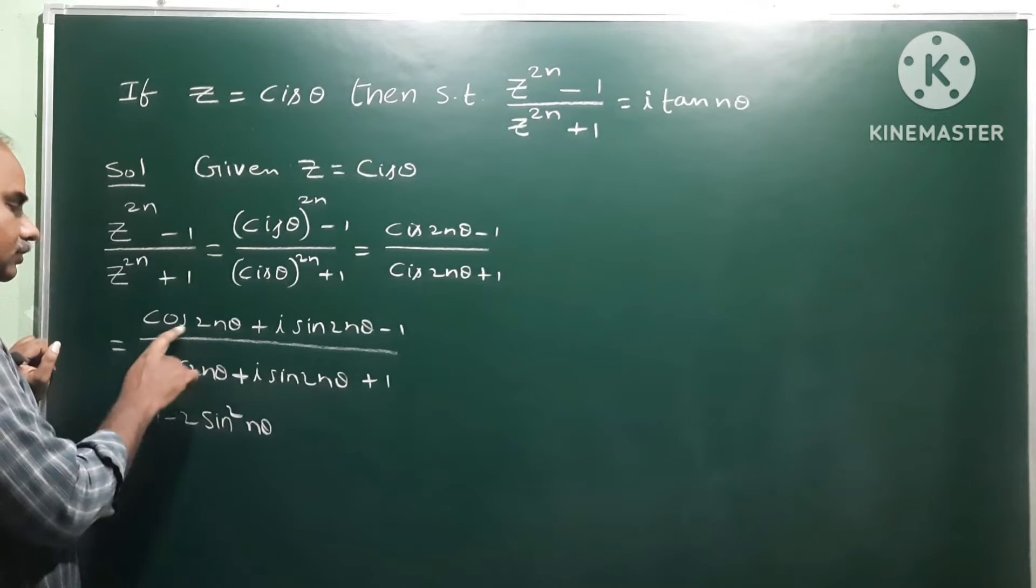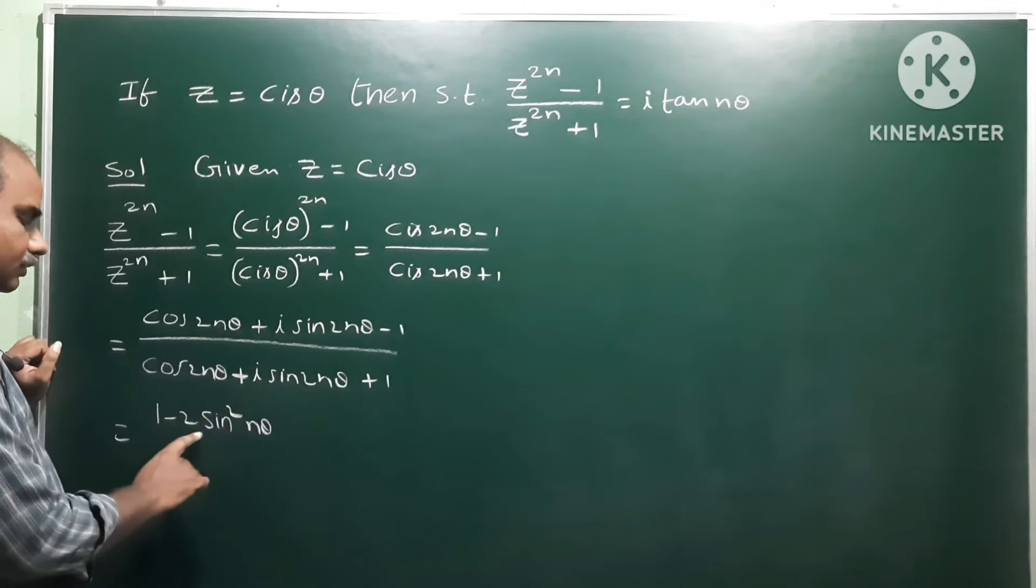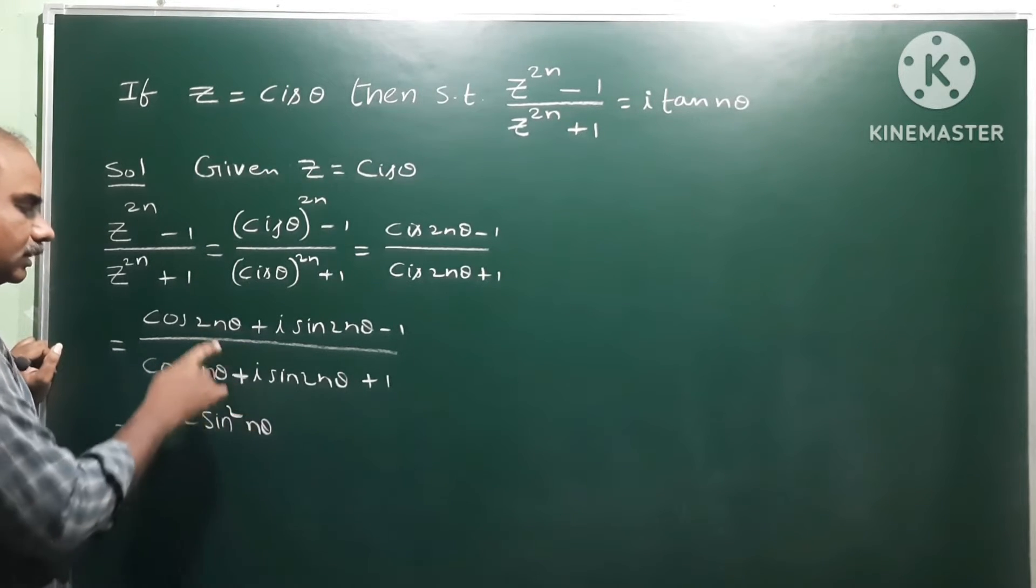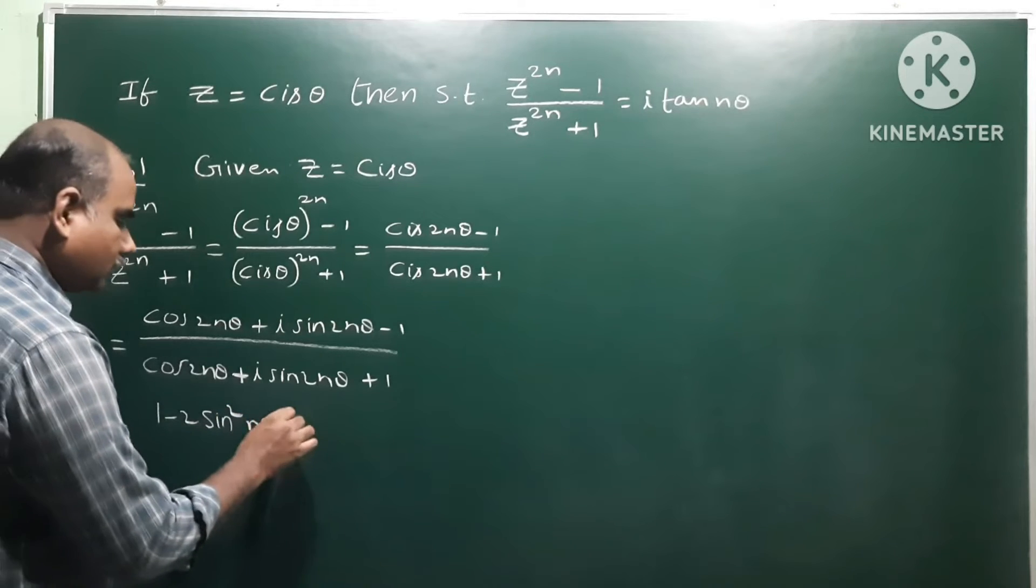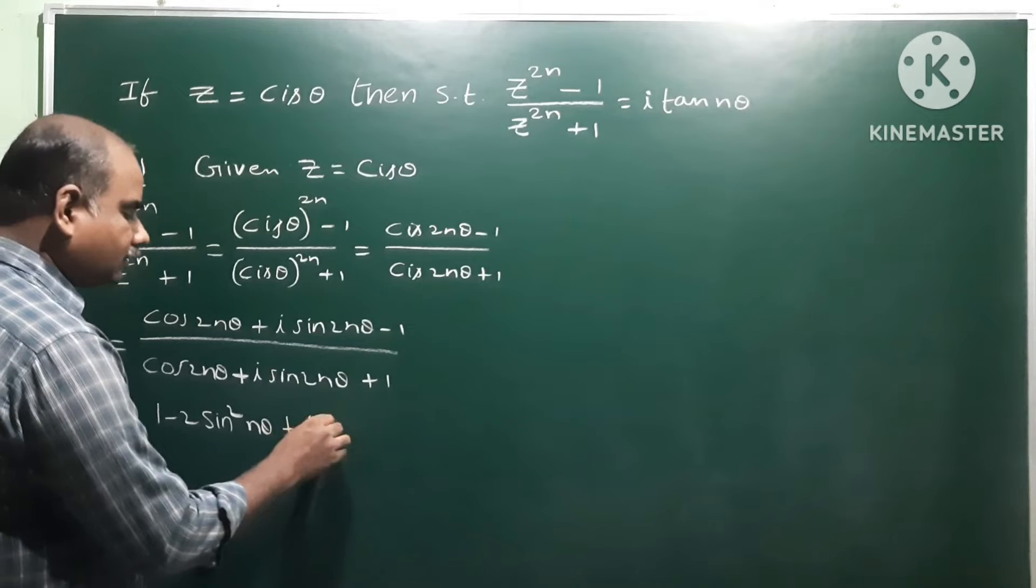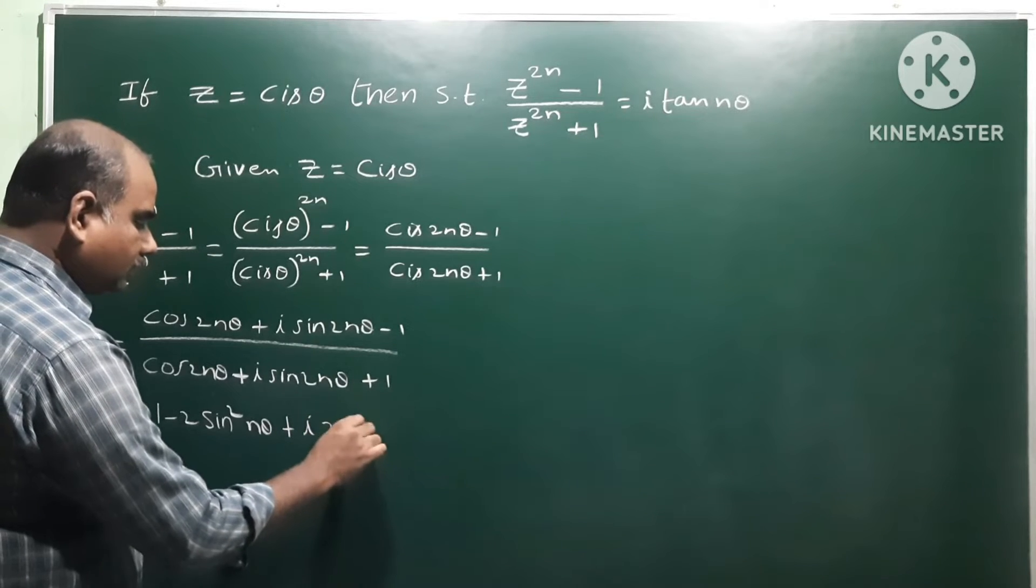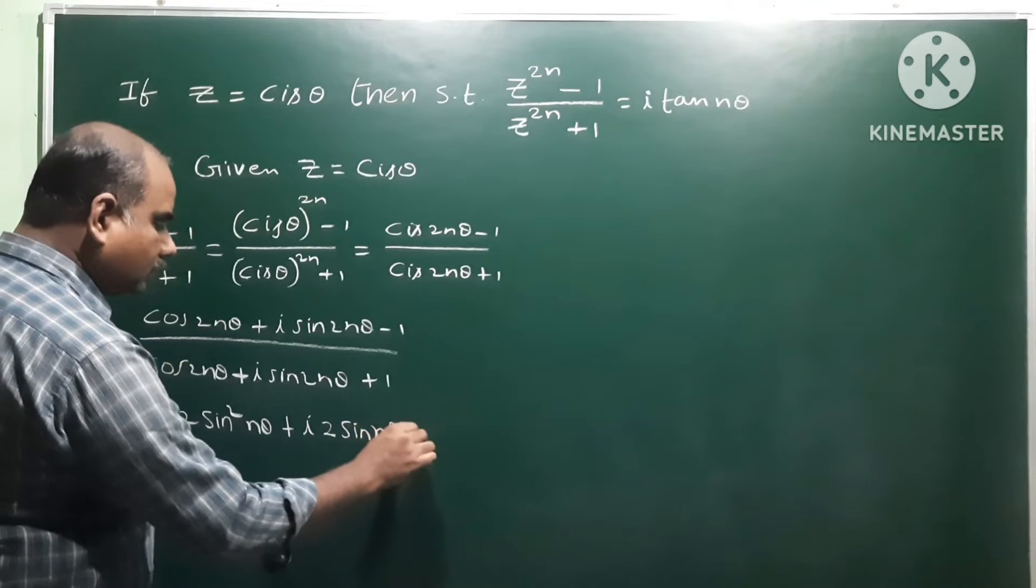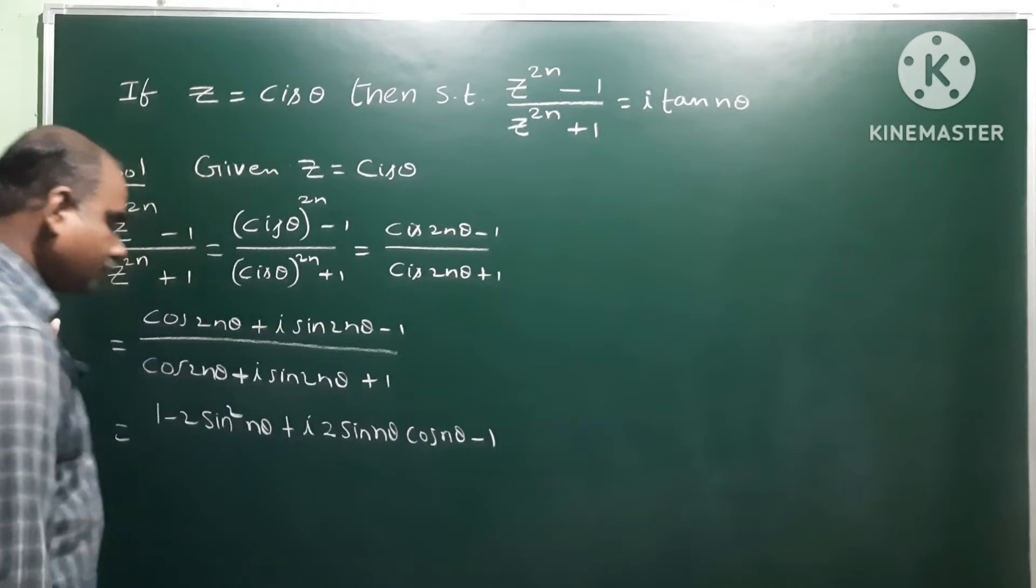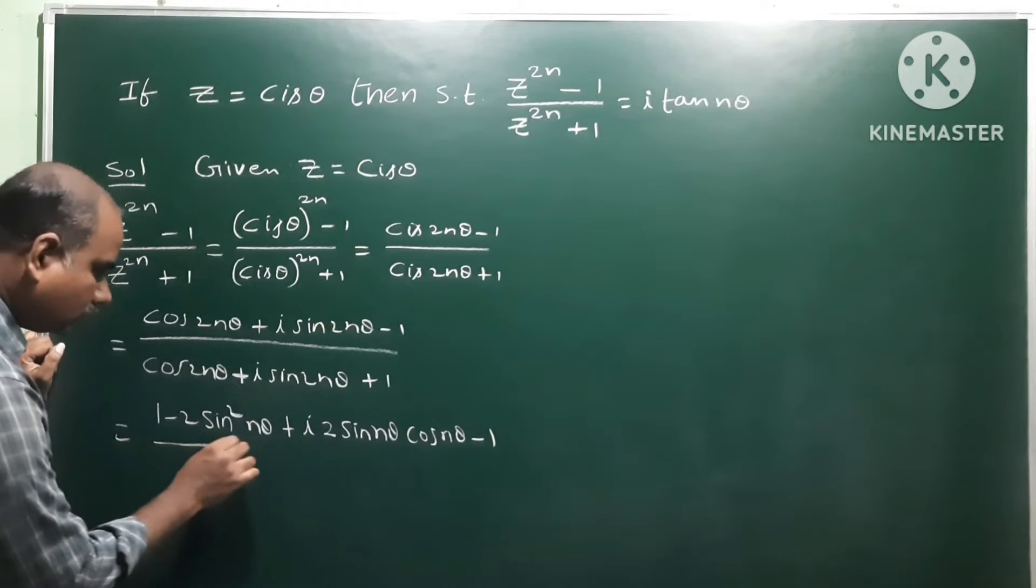So cos 2nθ formula: 1 minus 2sin²nθ. Cos 2nθ minus 1 whole by